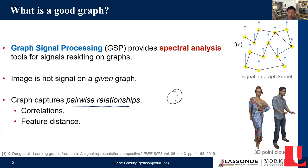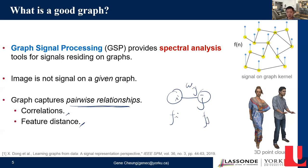A graph typically conveys a pairwise relationship. When two nodes i and j are connected, the weight w_{i,j} conveys some similarity information — either through a statistical notion like correlation (how correlated they are as random variables), or a notion of feature distance. If you associate feature vectors f_i and f_j with nodes, you can compute a feature distance between the nodes given those feature vectors.